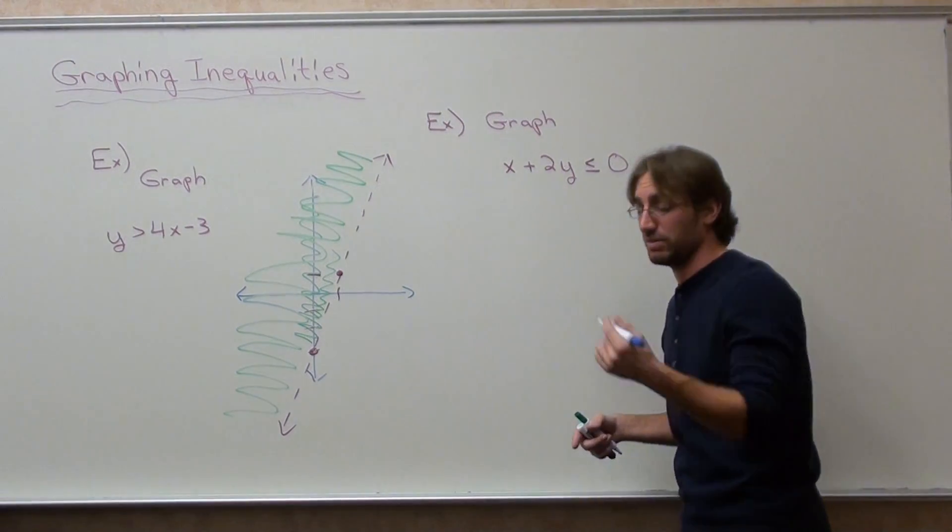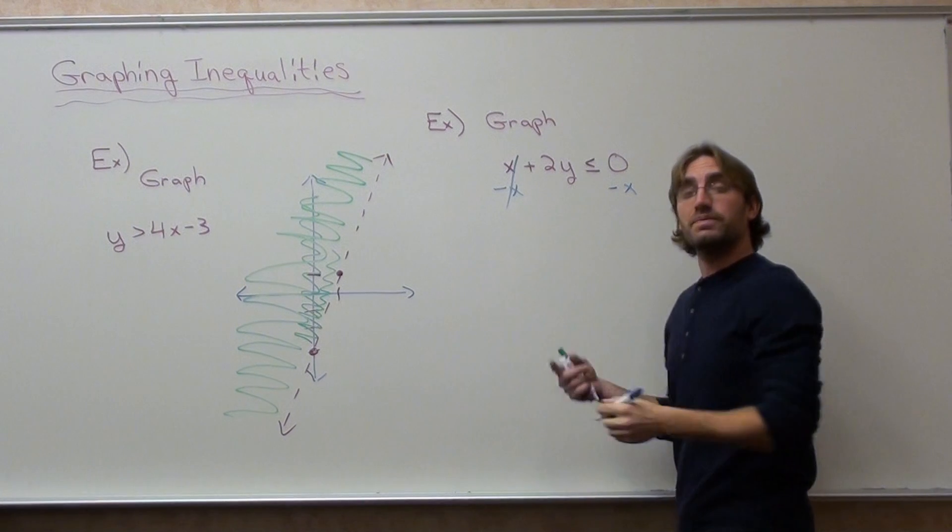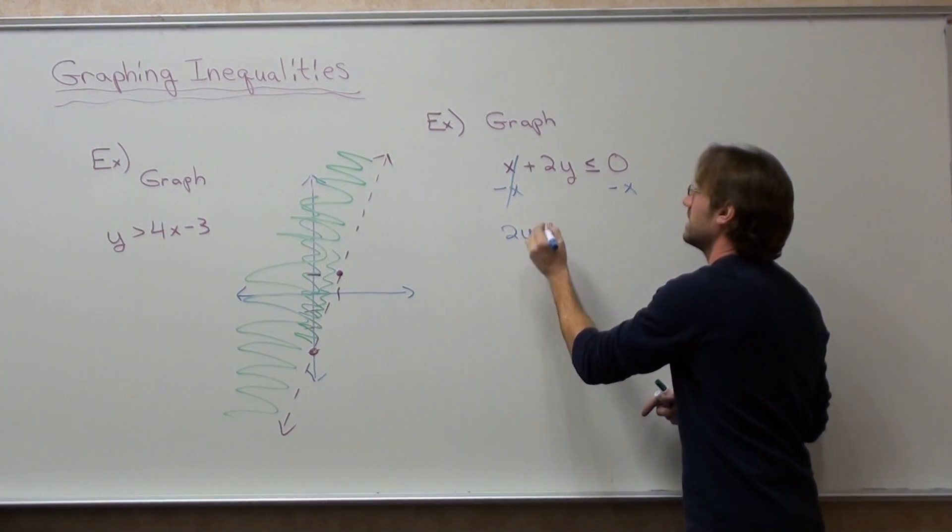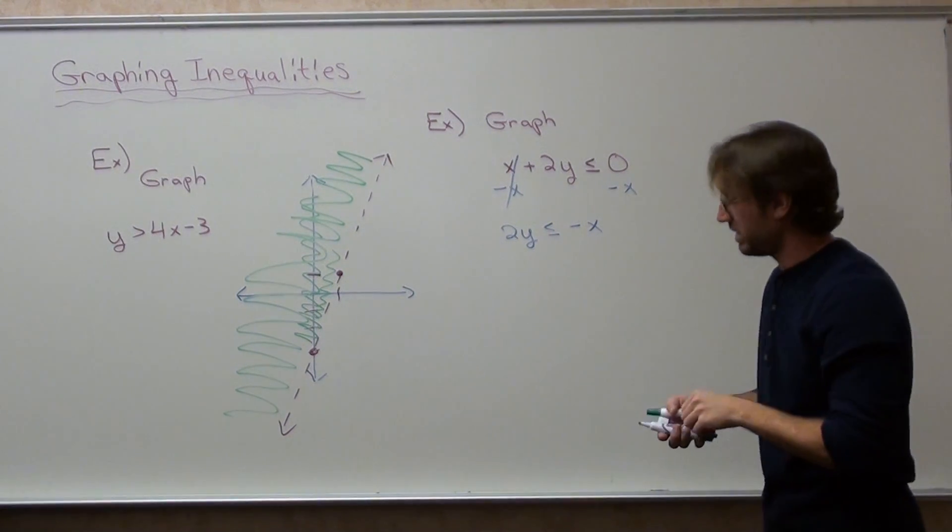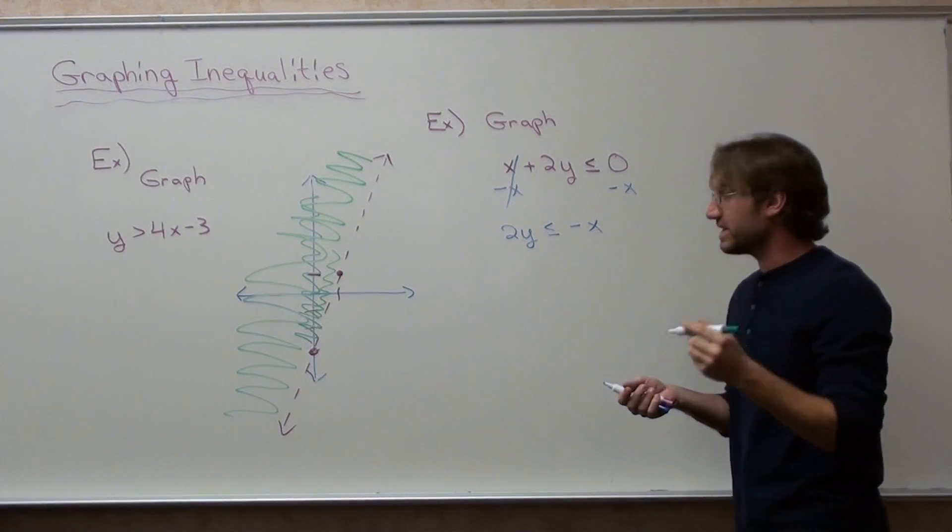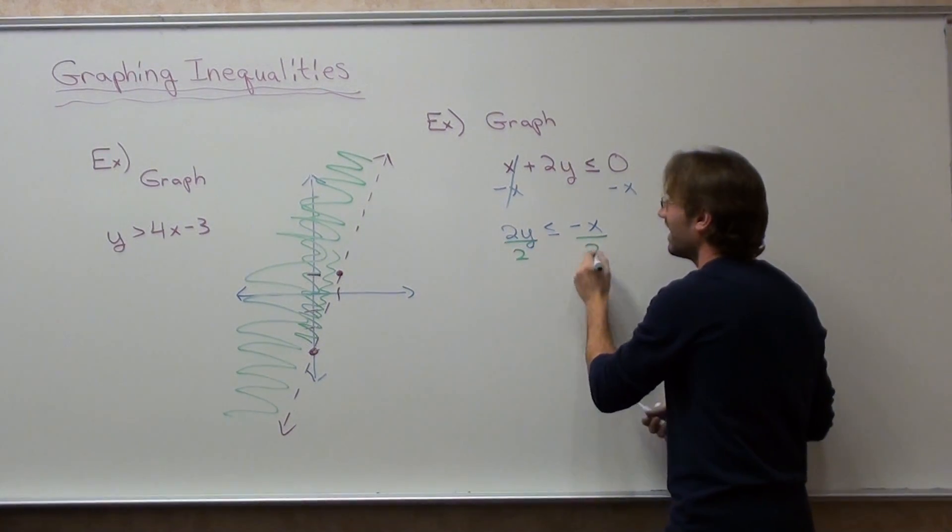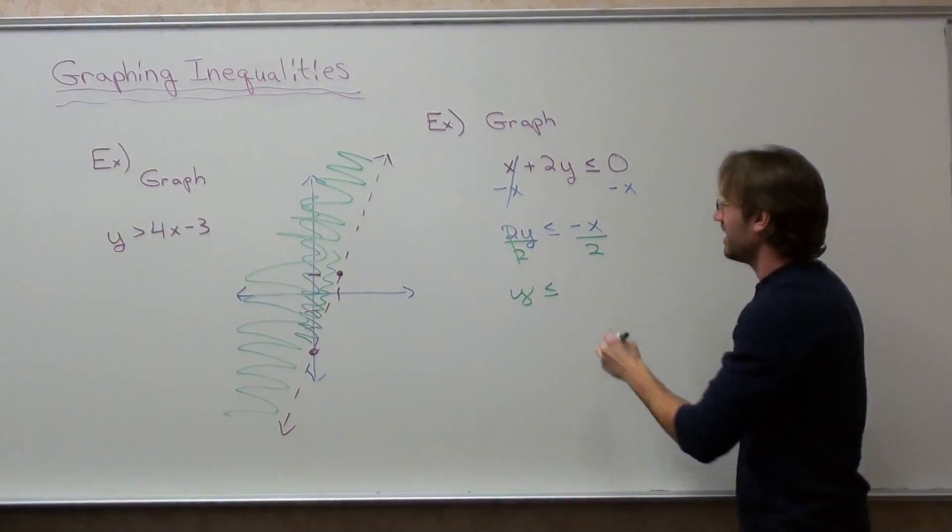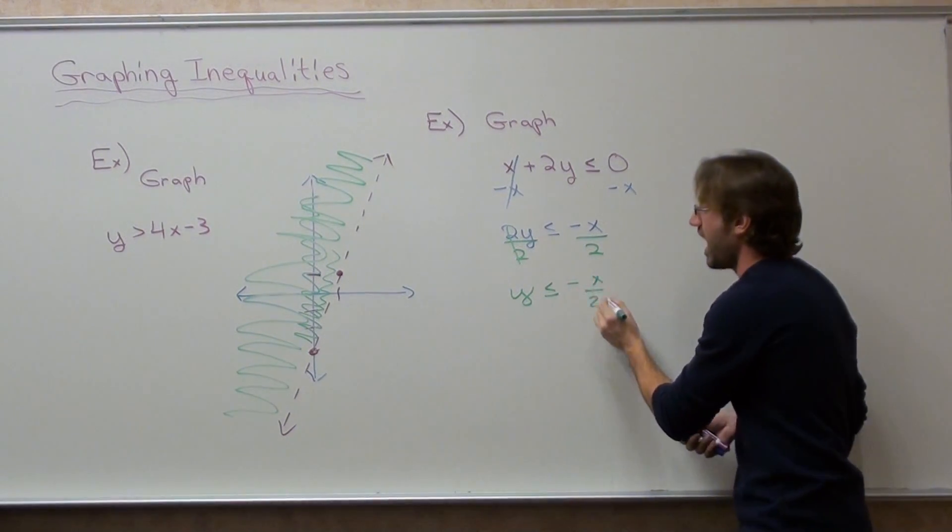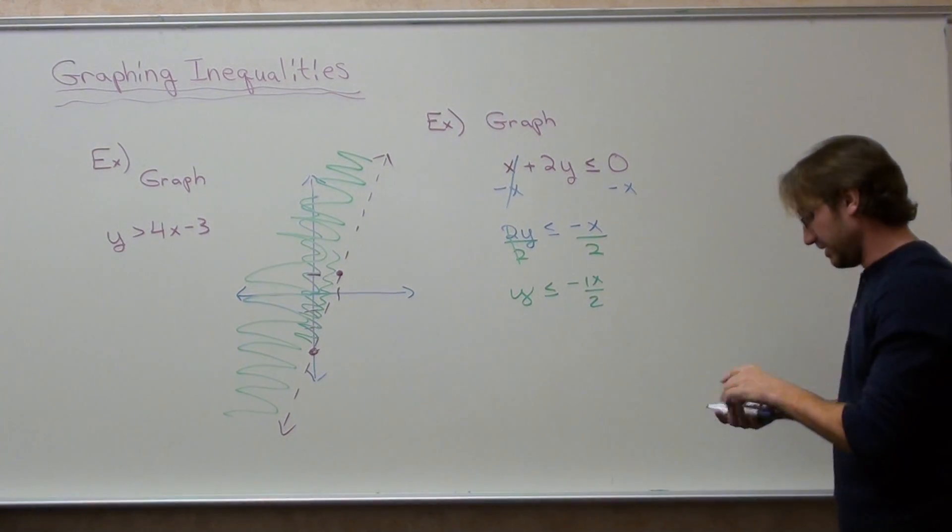I'm going to subtract x on both sides and I get 2y is less than or equal to negative x. You can put plus zero, but that's pointless. Now you want to still get y by itself, so divide by 2, and you get y is less than or equal to negative x over 2, actually negative 1x over 2. I'm going to graph this now.